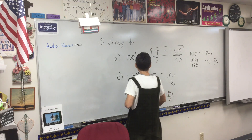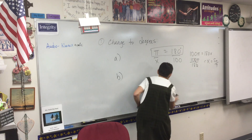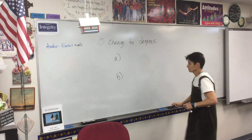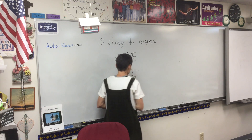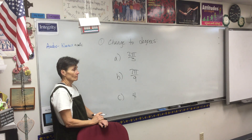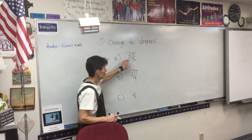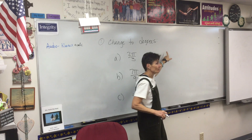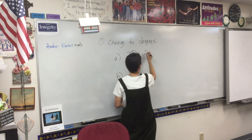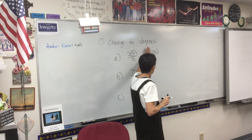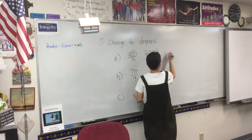So now we'll change to degrees. We're going to start with radian measures. I'm going to do three of these: 2π over 3, 7π over 9, and 4. These two are incredibly simple. This one involves a little more work, but these two are easy. What did I have boxed right here that I said was so important? π is 180. So see this π right here — I'm going to think of it as 180. What's 180 divided by 3? 60. What's 60 times 2? 120. So the answer is 120 degrees.